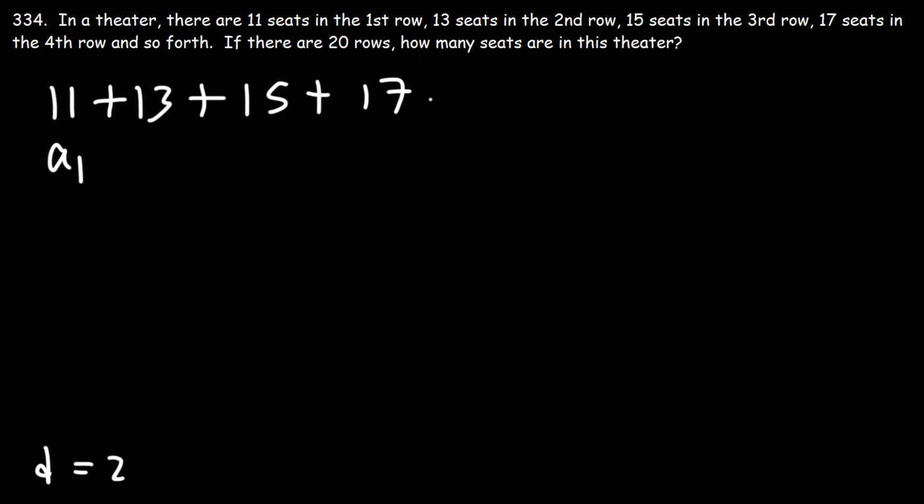This is the first term. We need to know the 20th term. There are 20 rows, so n is 20. Now we can keep going 20 times, but that's going to take some time. But we know the last term is the 20th term. So let's find the value of the 20th term using this equation.